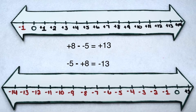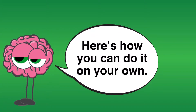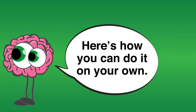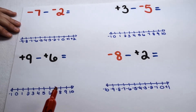Looking at the number lines and all the problems we've done, we can see that there's going to be a relationship between addition and subtraction when we work with negatives. We'll explore this more in our algorithm for subtracting with negatives. Let's try a few more examples of subtracting with negatives on a number line.